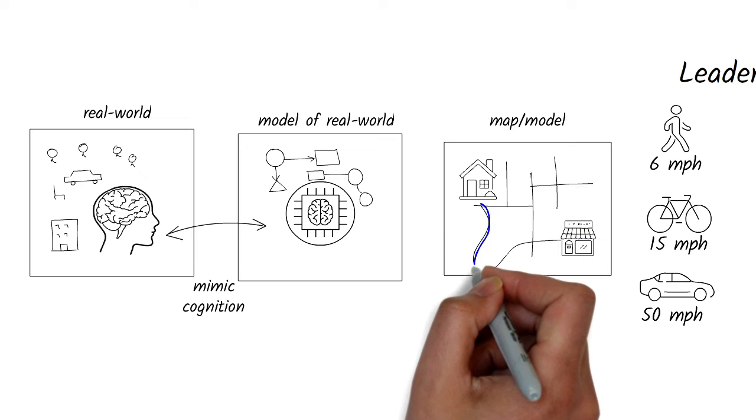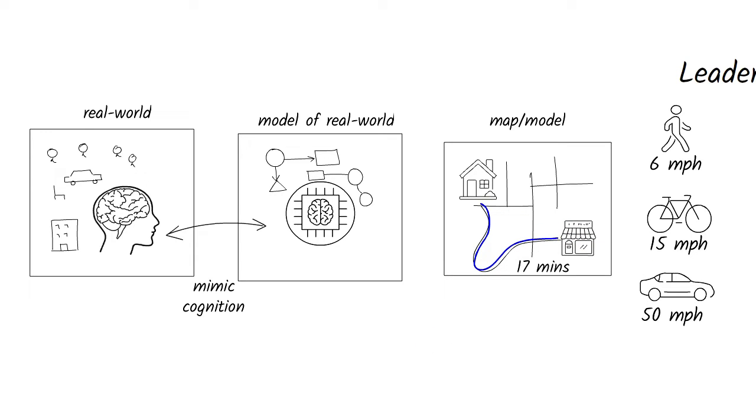The computer can then compute how long it takes to go to the restaurant based on your mode. This is useful information because you can time when to leave the house. Essentially, you have modeled the real world in the computer and use that model to give you useful information so you can plan things in the real world.